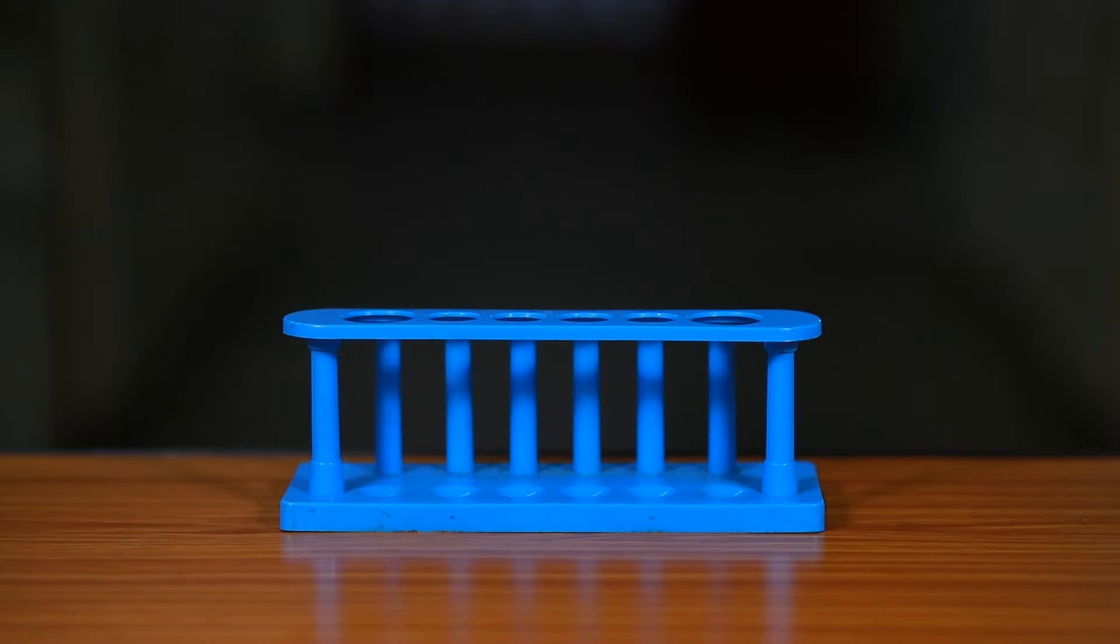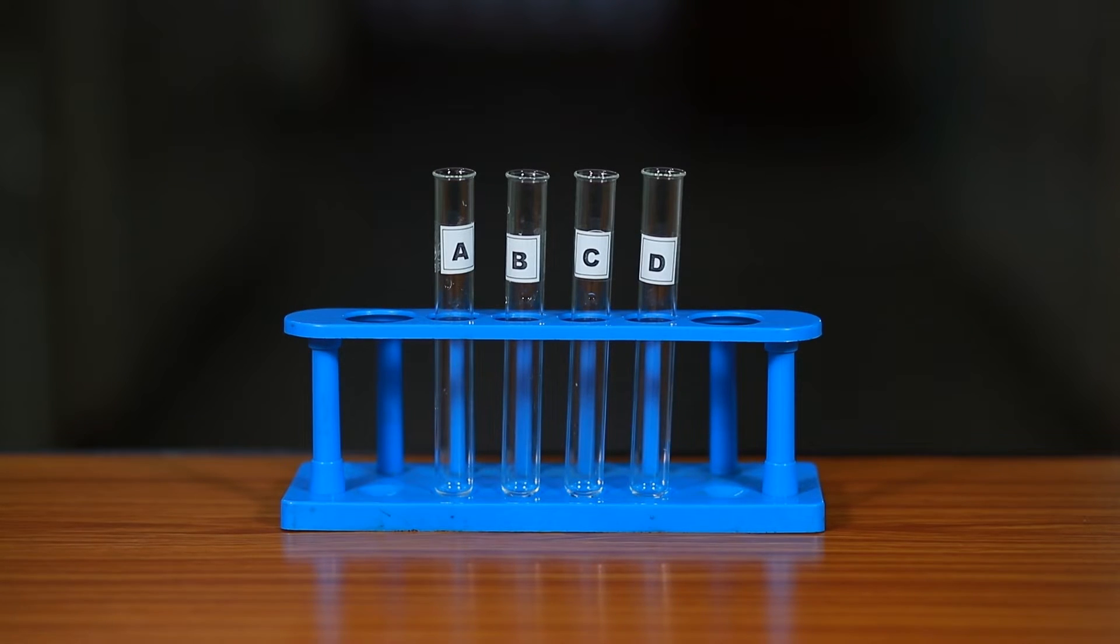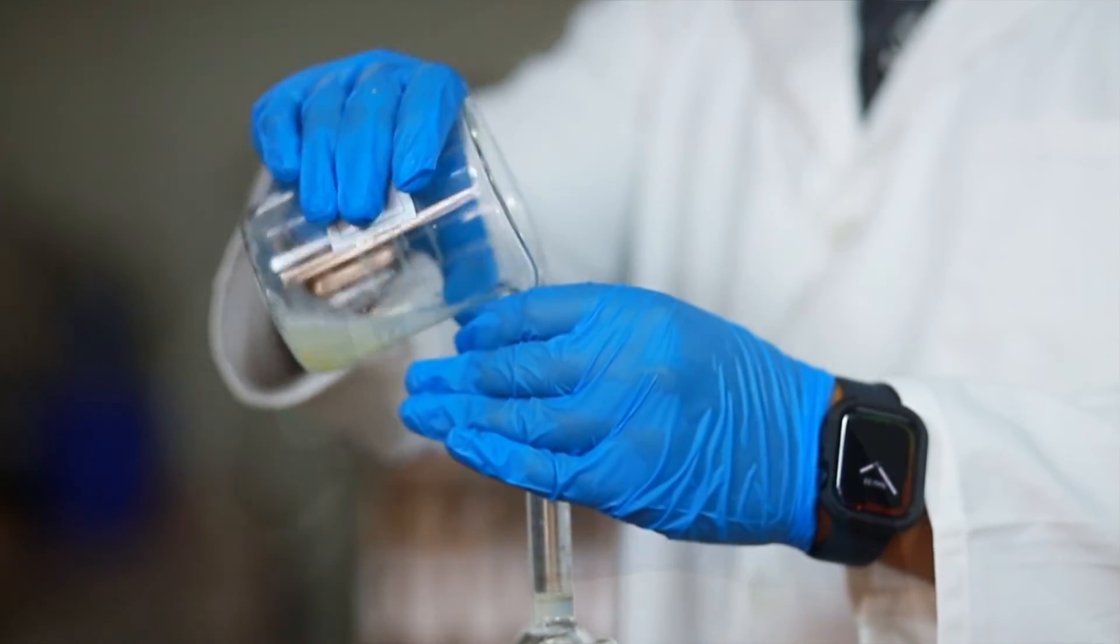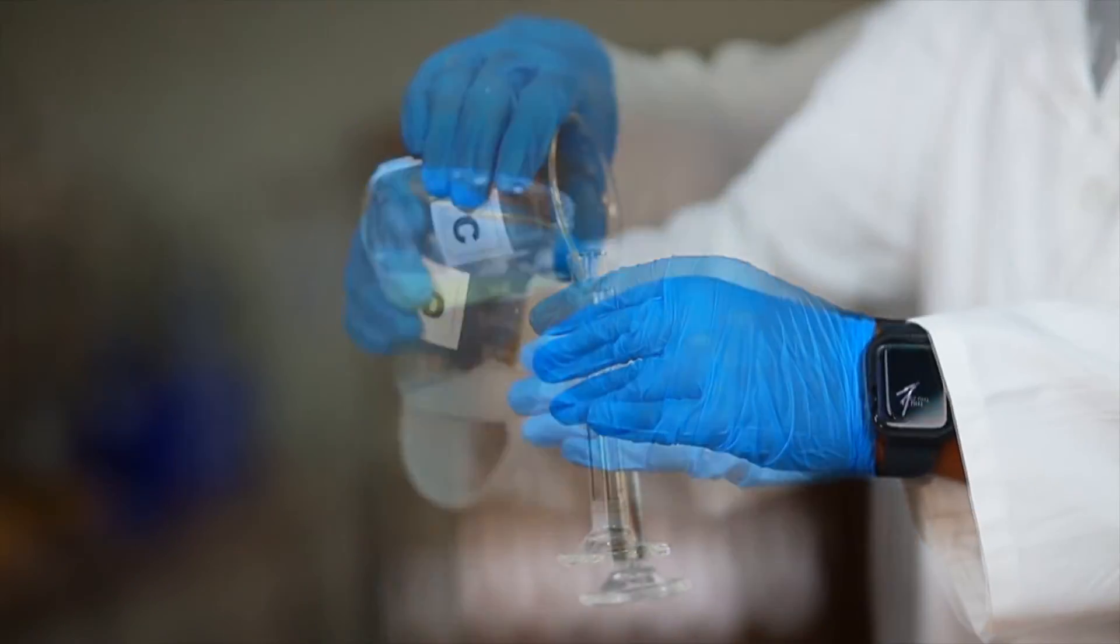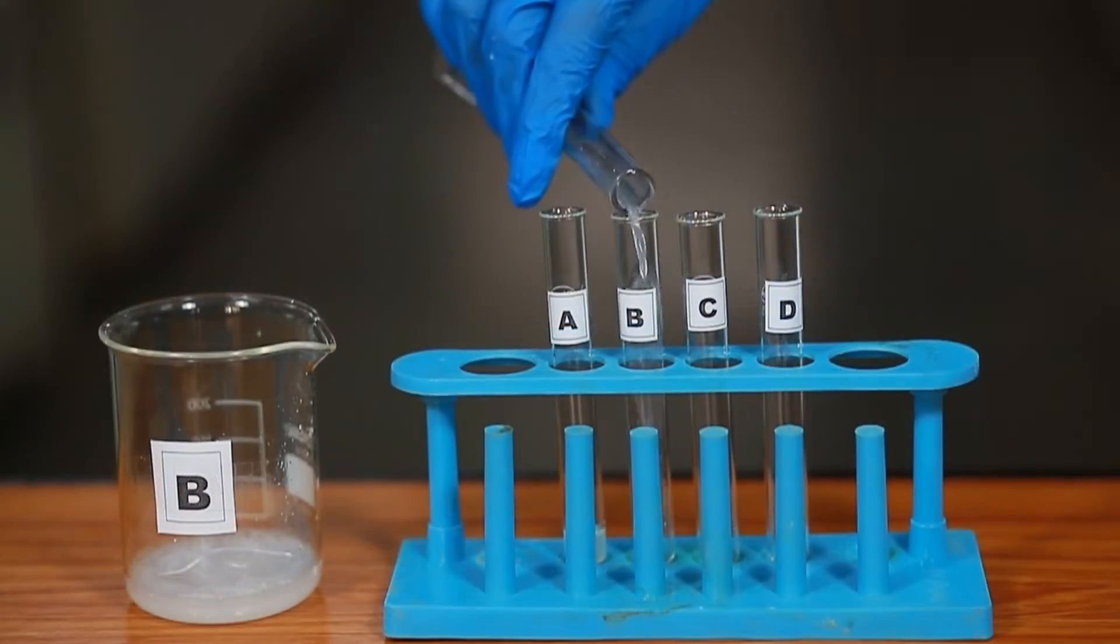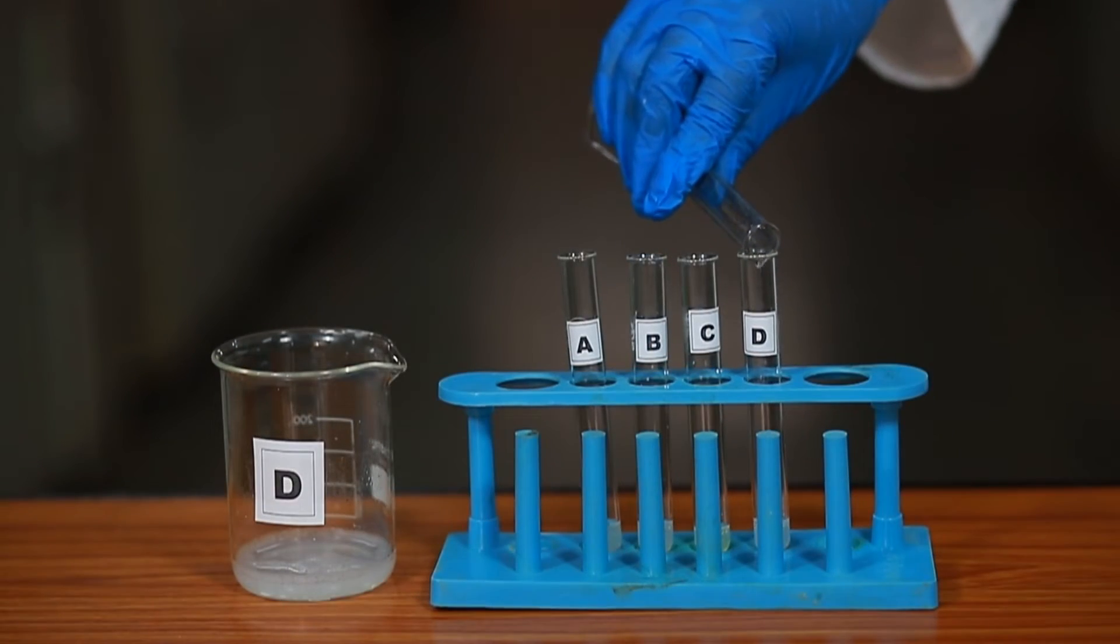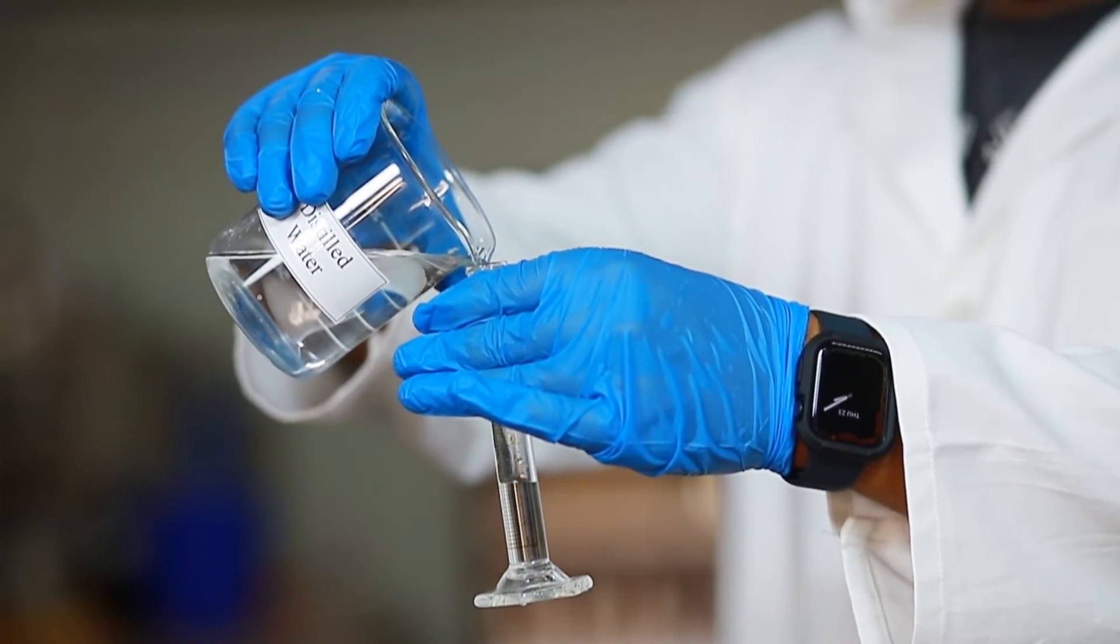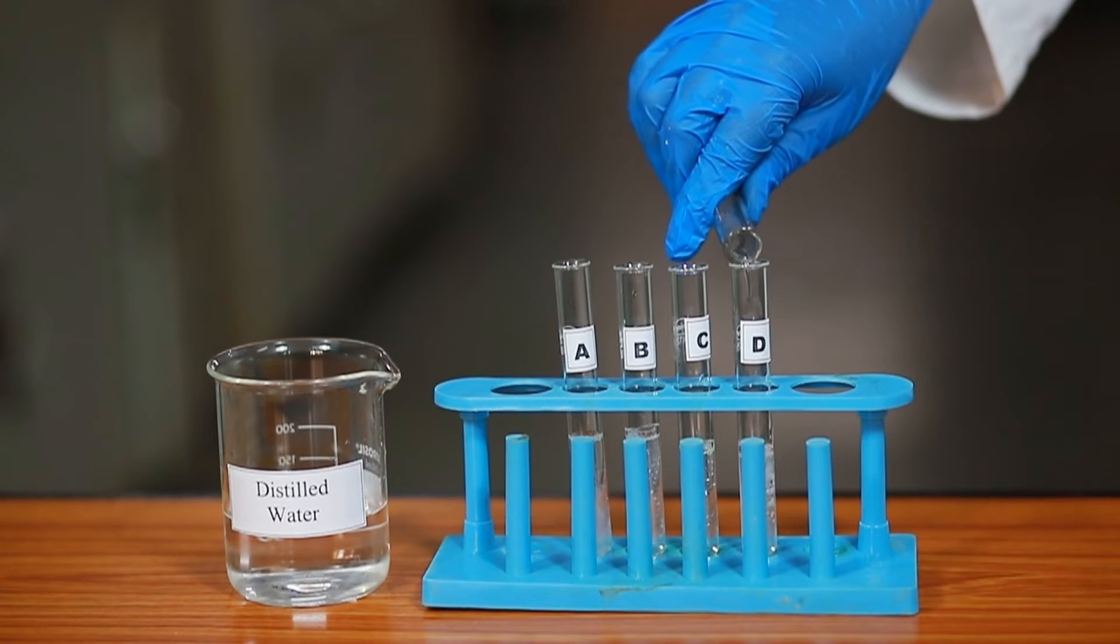Take a test tube stand and place the four test tubes. Label them as tubes A, B, C, and D. Pour one ml each of the above prepared soap solutions using a measuring cylinder into the corresponding test tubes. Add 5 ml of distilled water from the 250 ml beaker to each test tube using a measuring cylinder.